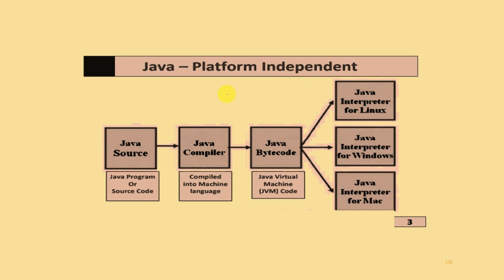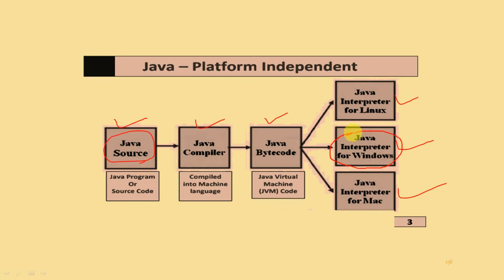Why is Java platform independent? First, you have the Java program or source code. After that, it is compiled into machine language - it will compile the program. After that, the Java Virtual Machine (JVM) generates a bytecode file. Java interpreters are available for Linux, Windows, and Macintosh, and you can convert the Java source code into a running program using those particular interpreters.